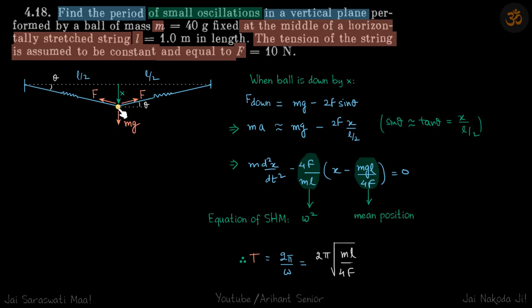Why are we doing that? So that we get the net force on this ball in terms of x. When this ball is down by x, then F_down is mg minus 2F sin θ. Why are we saying F_down and not F_up? Because if we're writing x in this direction, then later we can write a as d²x/dt² without worrying about the sign.